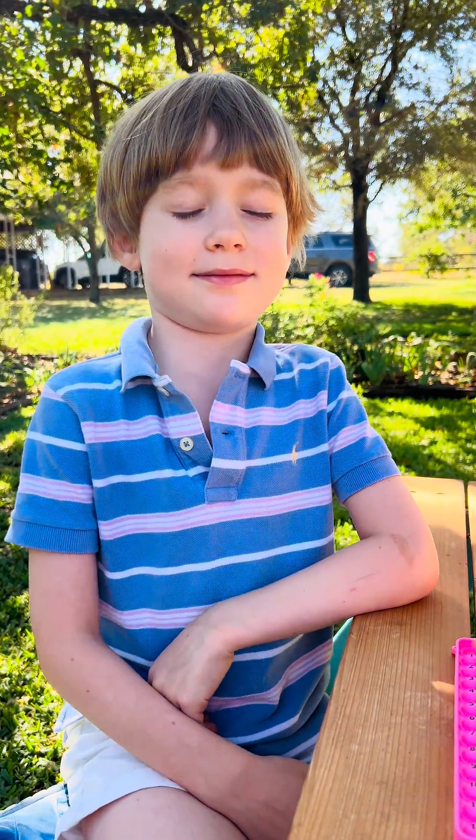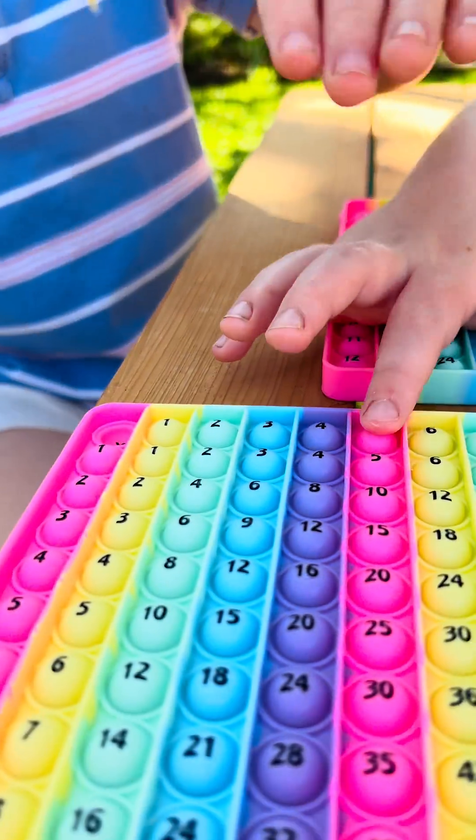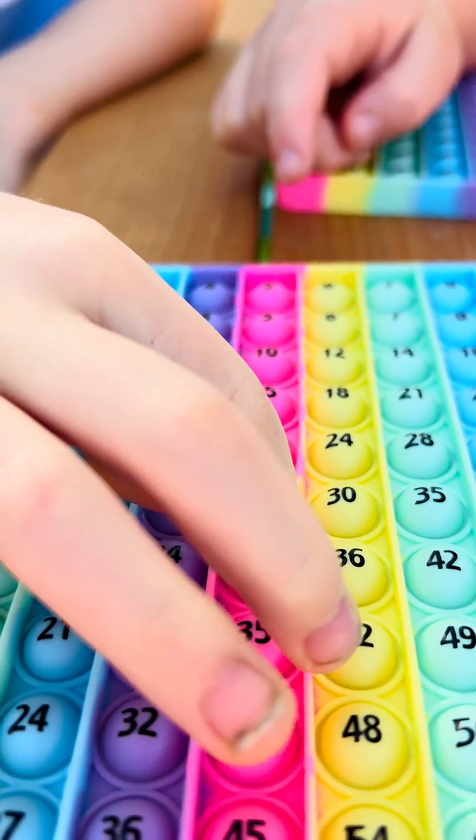Okay, Jamie, can you find me 5 times 5, which is also the same thing as 5 squared? Yeah. What is it? 25. Punch in the number 25.